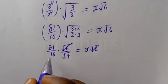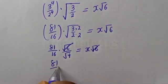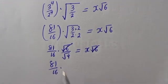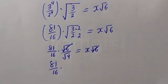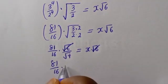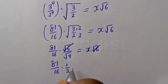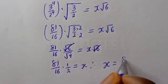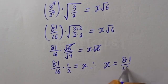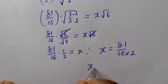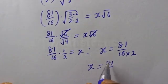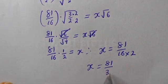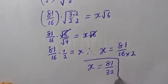We have 81 over 16 multiplied by 1 over square root of 4, where square root of 4 is 2, is equal to s. The root 6 cancels, therefore s is equal to 81 over 16 times 2, that is 81 over 32, and this is the final answer.